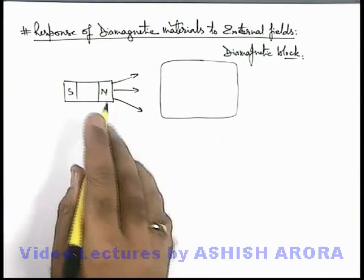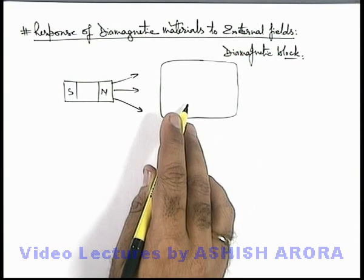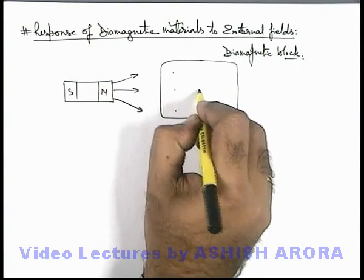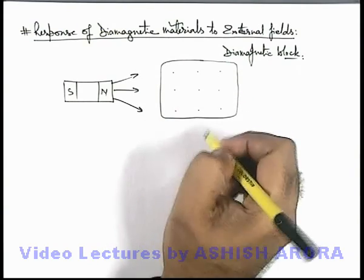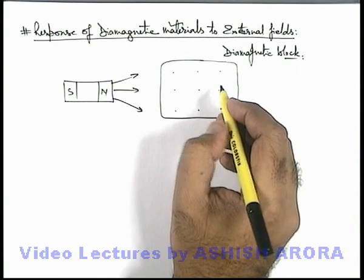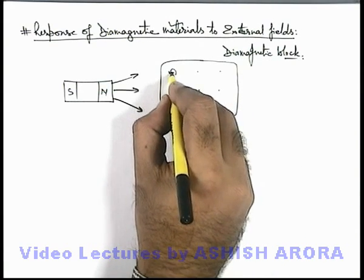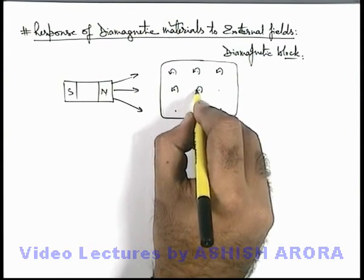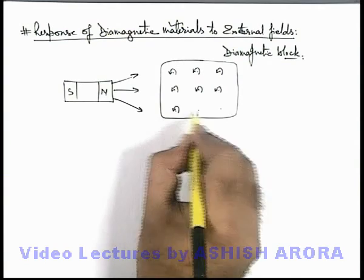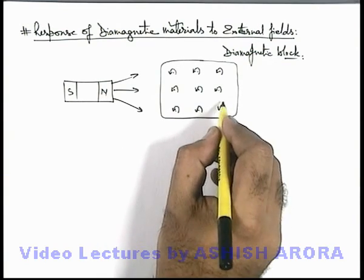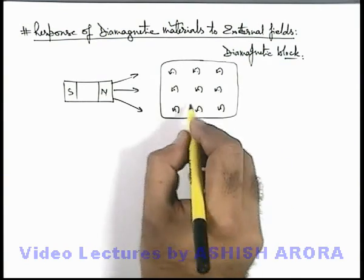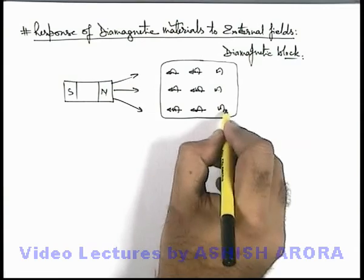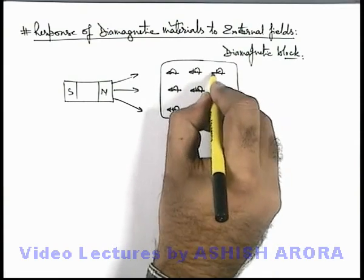The magnetic field of this magnet, as soon as it is applied onto the block — we know that in a diamagnetic material every atom or molecule has net zero dipole moment — but as soon as the magnetic field is applied, in an individual atom, small or miniature currents are induced due to the effect of applying external magnetic field. So in this situation, every atom or molecule will start behaving like a magnetic dipole, of which the dipole moment is induced in the direction opposite to that of the external magnetic field.